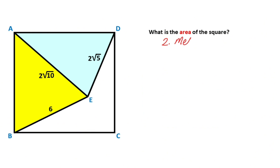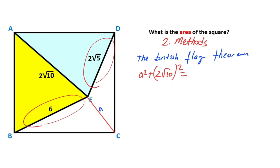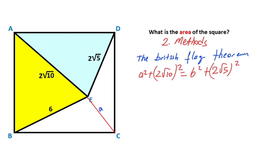Now let's calculate the value of x using a second method. First, let's extend this corner and call it point A. For this square, if we apply the British Flag Theorem: a² + (2√10)² = 6² + (2√5)². Therefore a² + 40 = 36 + 20, so a² = 16, meaning a = 4 units.